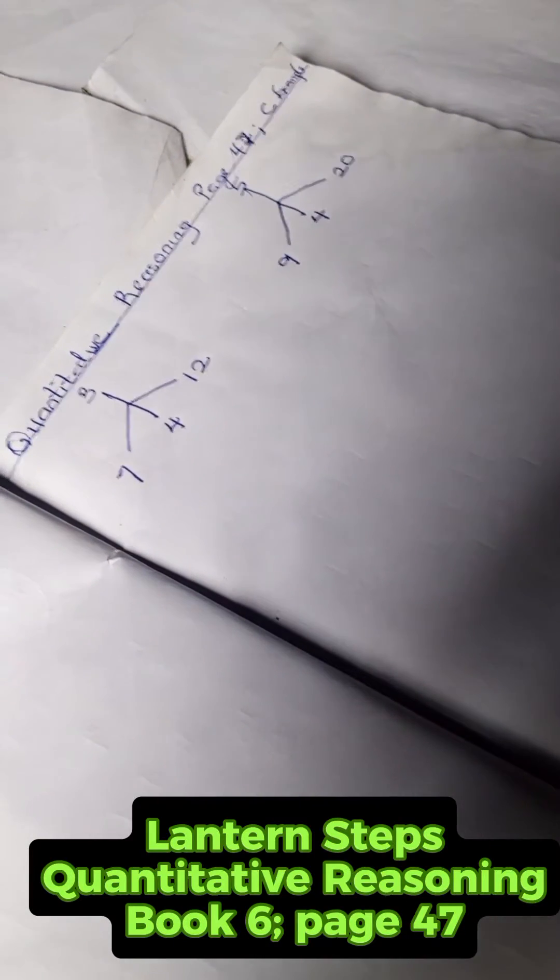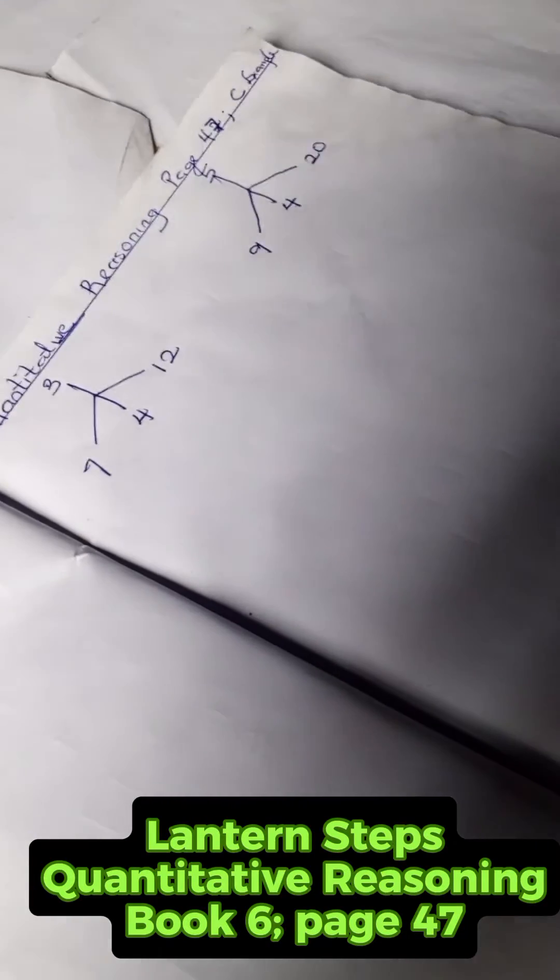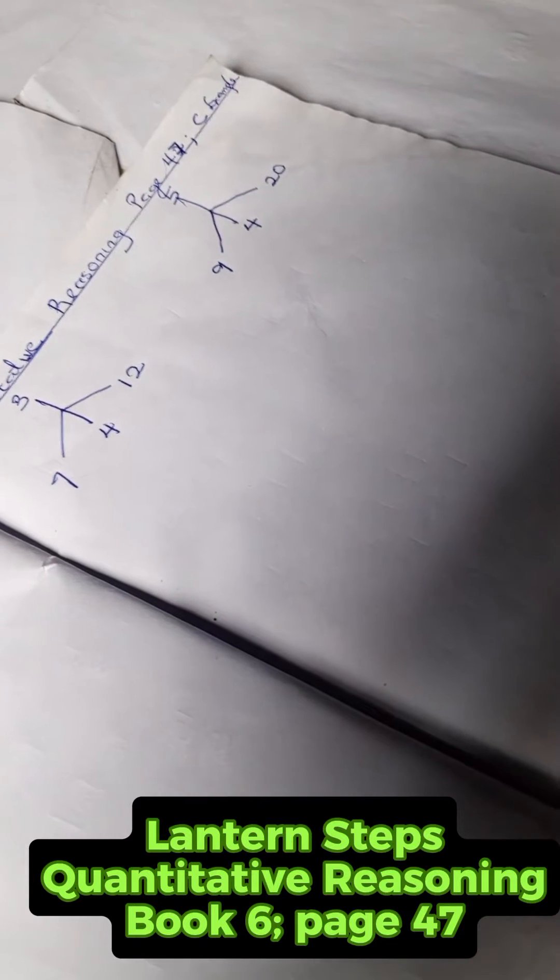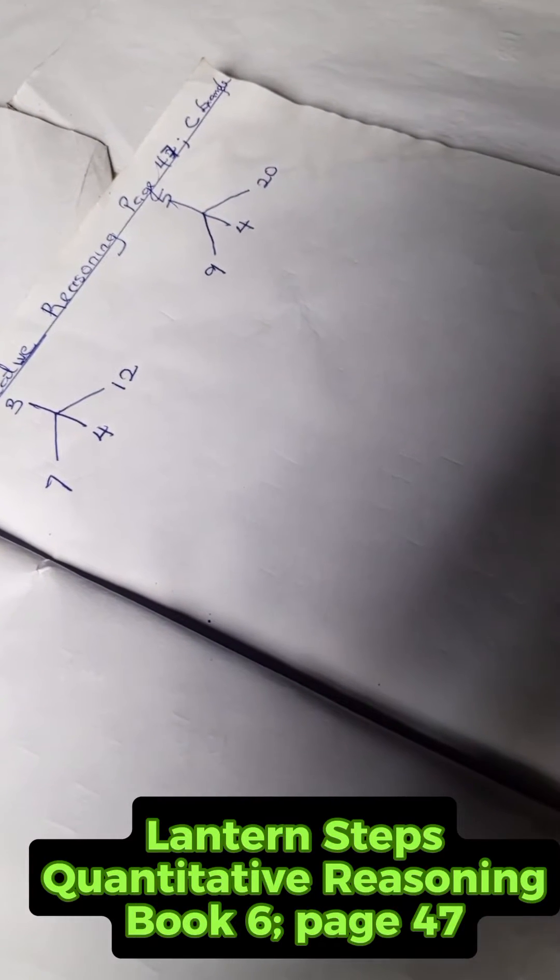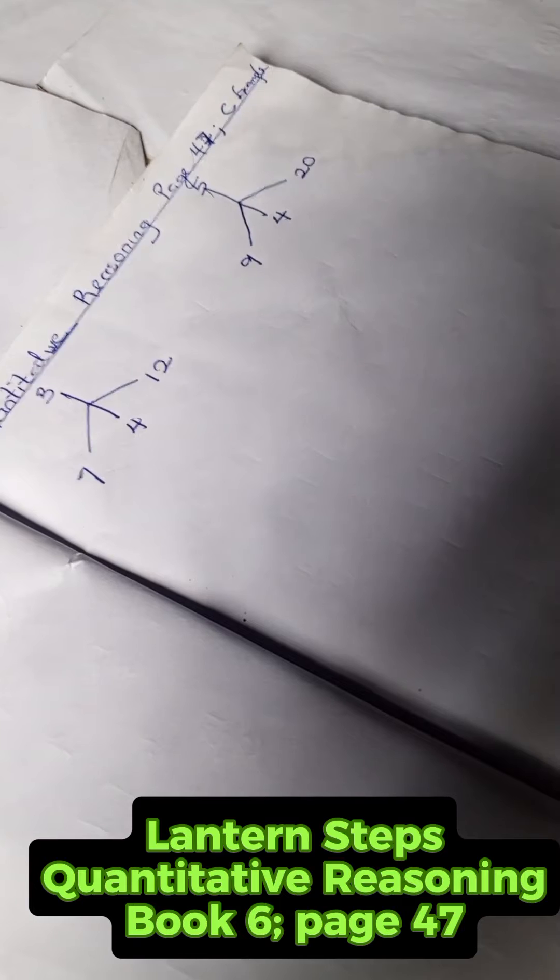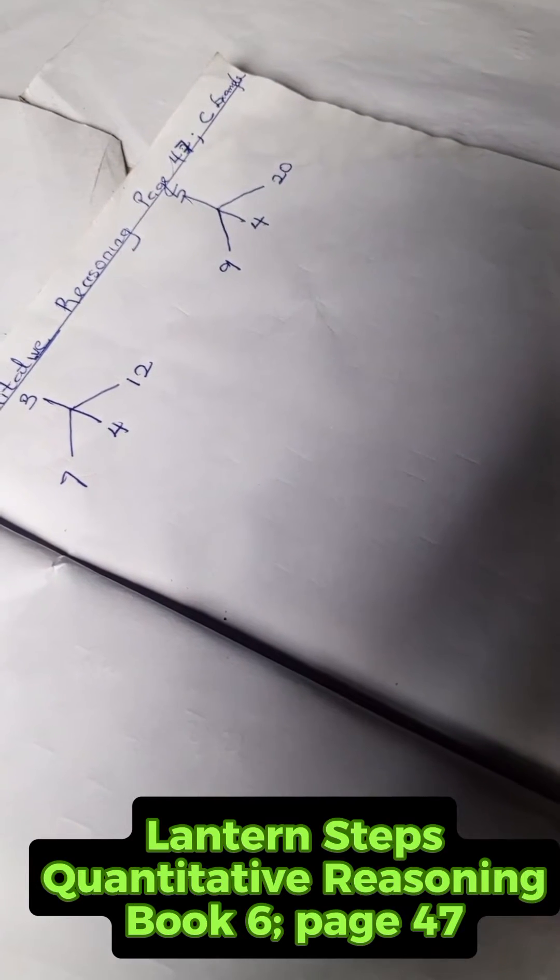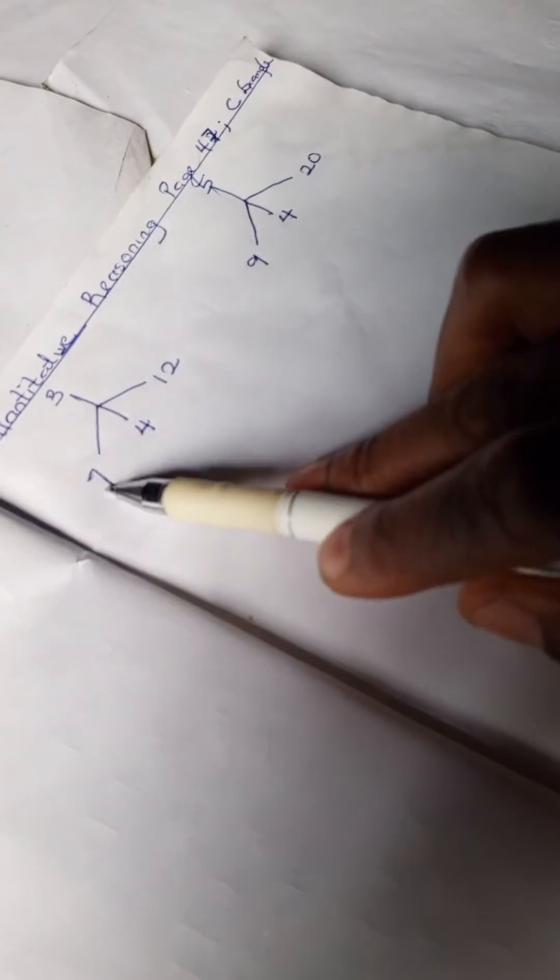Welcome to Quantitative Reasoning Solution. Here we have our quantitative reasoning from Lantern Step page 47, grade six. We have this problem to solve: we have 3, 4, 7, 12 and here we have 5, 9, 4, 20.